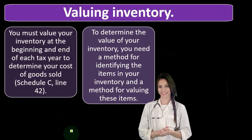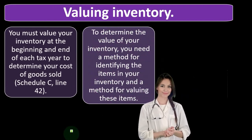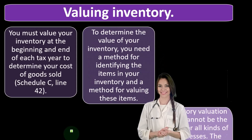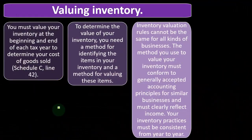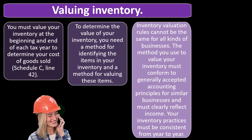To determine the value of inventory, you need a method for identifying the items in your inventory and a method for valuing these items. Usually you've got the cost, but the cost of inventory could have changed over time — usually going down. So if you're holding on to old inventory, it may not be worth what it was when you bought it. You might have to use a flow assumption: first-in first-out, LIFO, or weighted average.